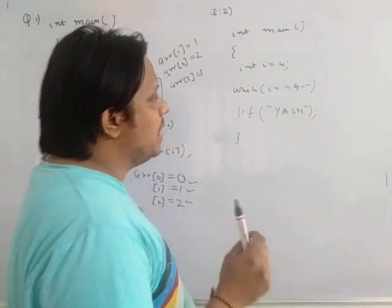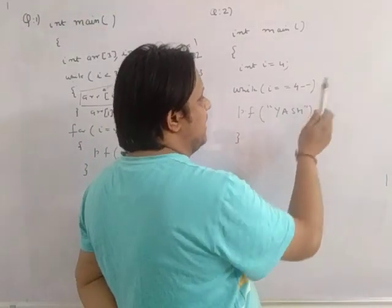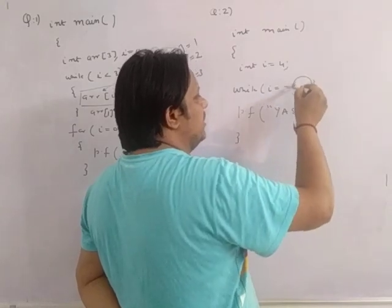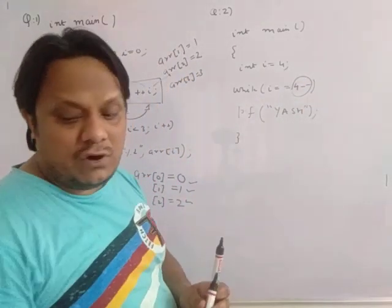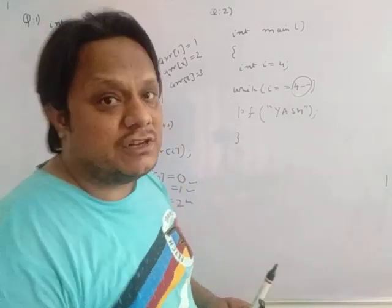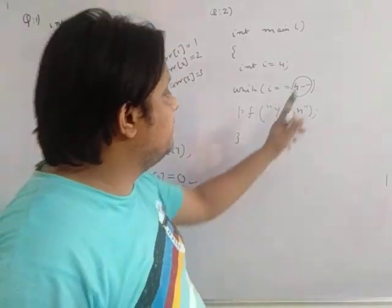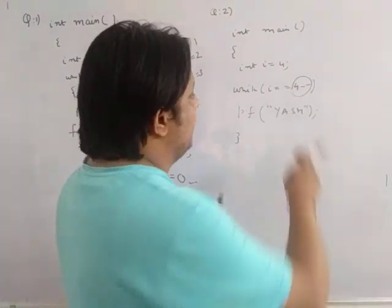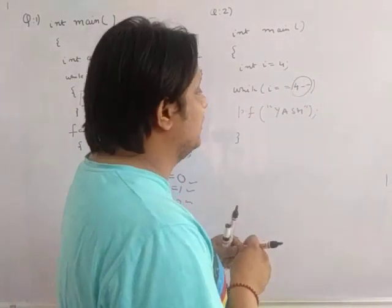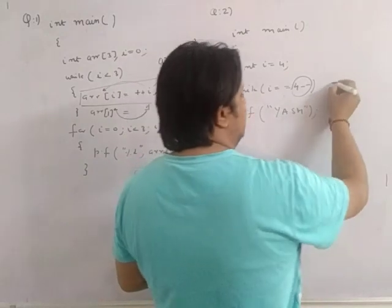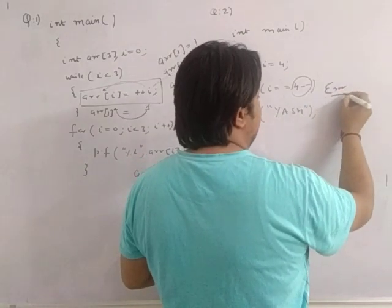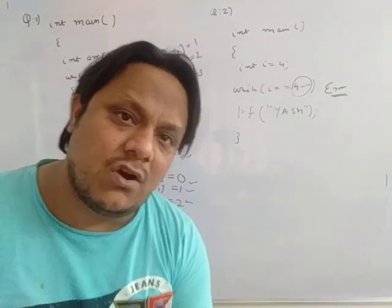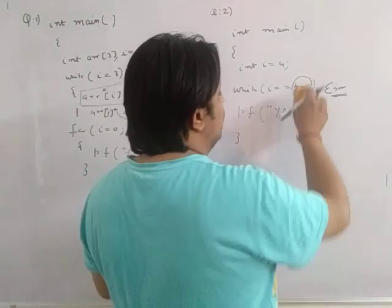The correct concept is that we cannot apply increment or decrement operators on constant values. In `i-- == 4`, the `4` is a constant, and you cannot apply a decrement to a constant. Decrement and increment can only be applied to variables. So this code results in a compile error.